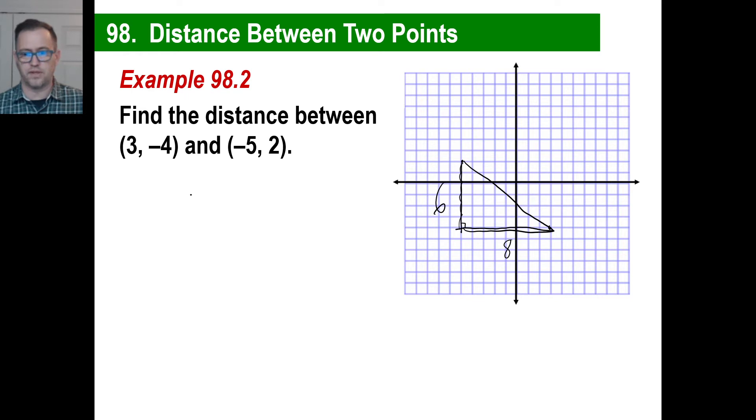Well, we have 6 and 8. This might look familiar to you. Question is, what is this? Well, 6 squared plus 8 squared is going to be the hypotenuse squared, or c squared. So 36, 64, that's going to be c squared. So c squared is equal to 100. And of course, the square root of 100 happens to be 10. So that works out to an integer answer.